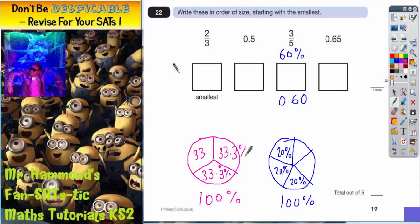Same for this piece 33.3 recurring and because we're only interested in two-thirds we're going to rub that one out. So that shows two-thirds. Now if you put your two-thirds together 33.3 recurring plus another 33.3 recurring is going to give you 66.6 recurring percent.